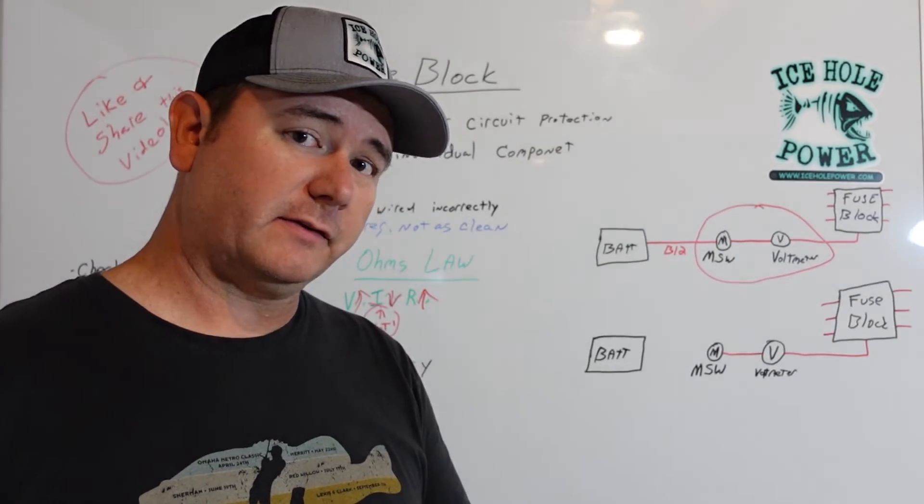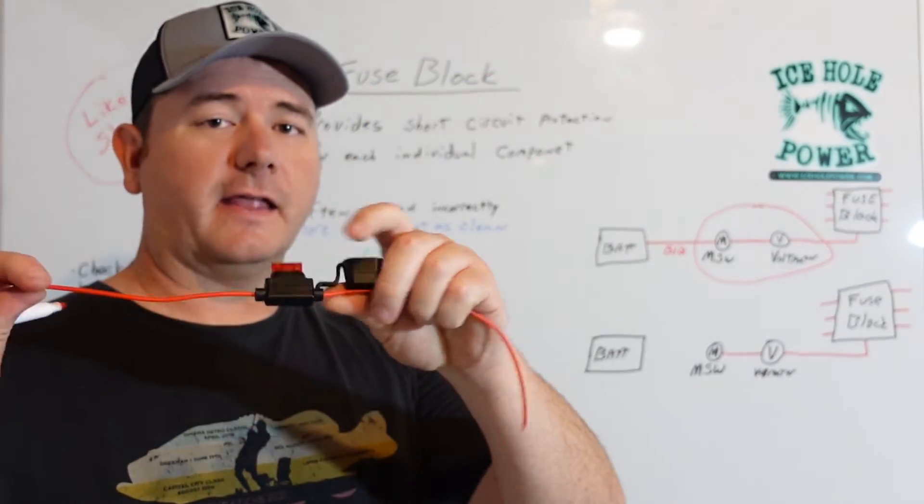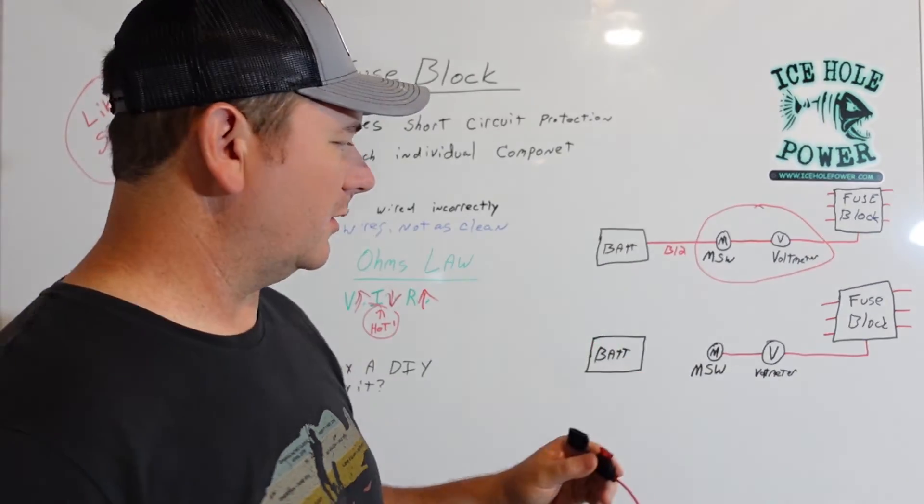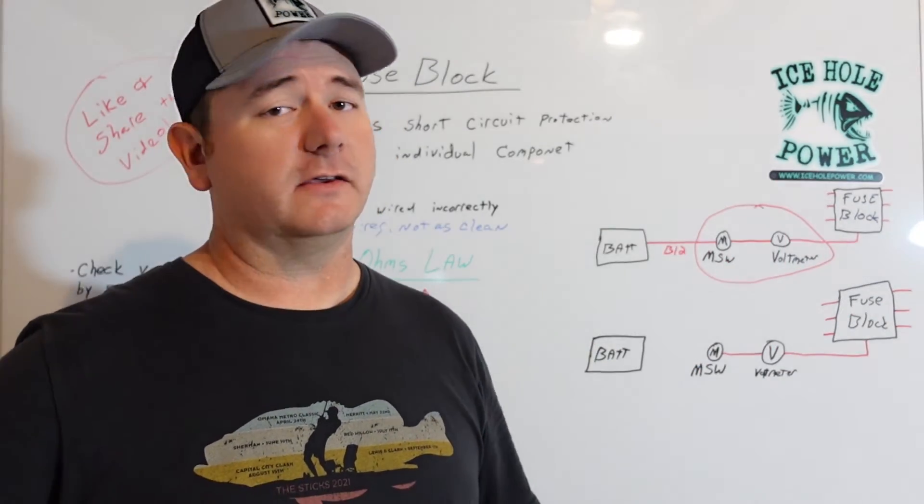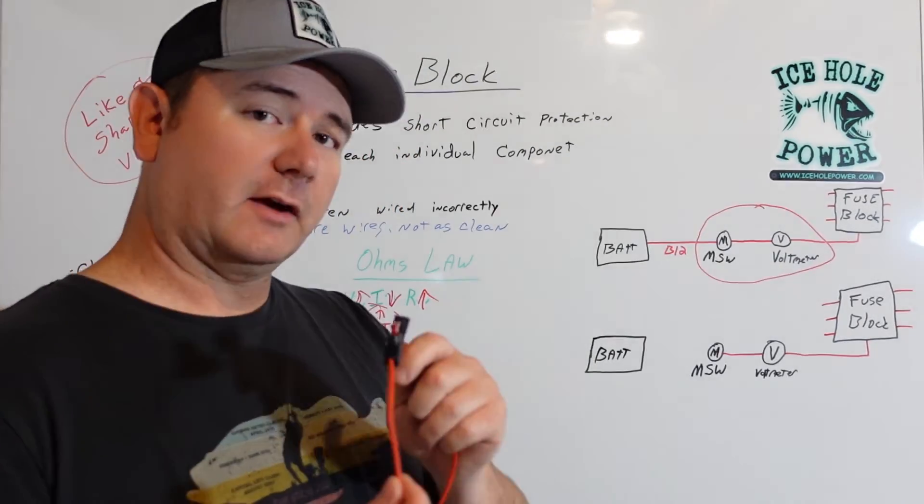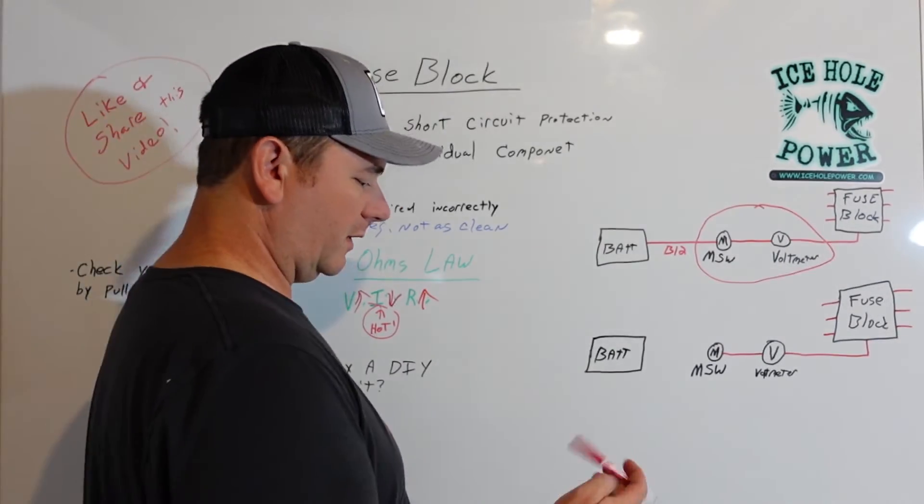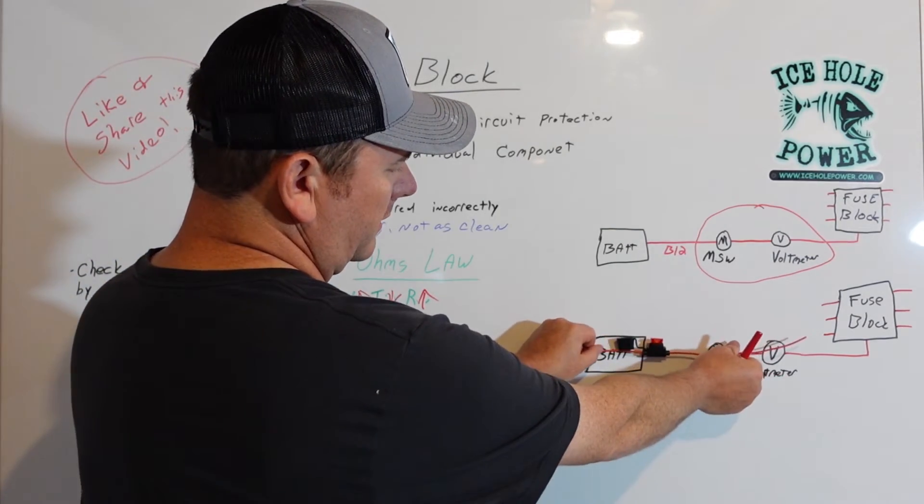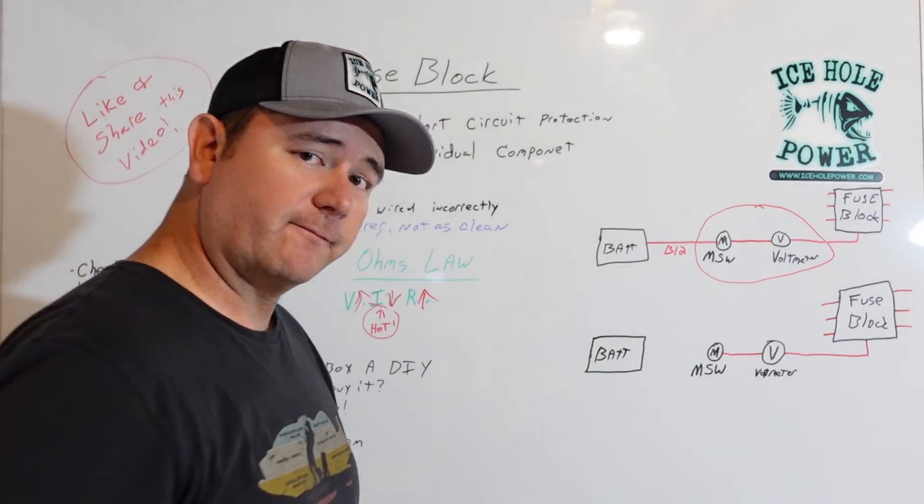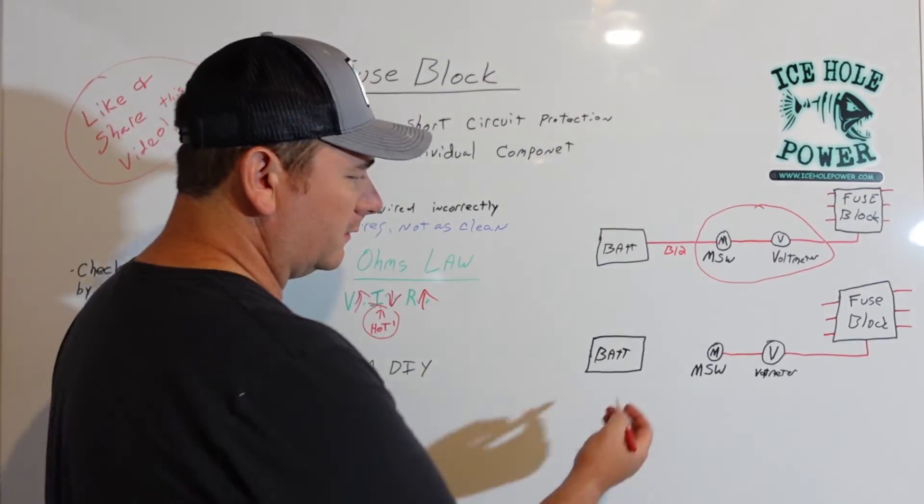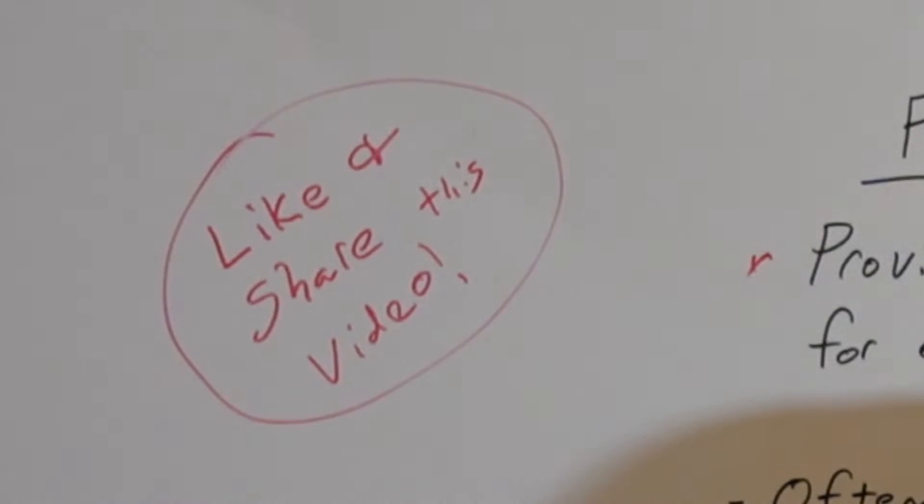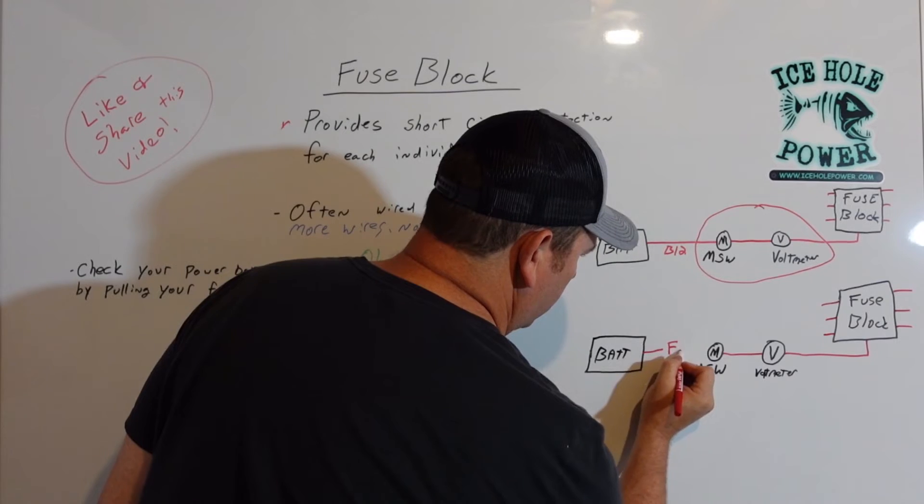Easiest way to fix that is this little guy here. So this is an inline fuse holder and they're super cheap. You can get them. I have them on site. You can get them on Amazon. I don't care. Get them wherever you want to get them. Just get one and put it in. So what you're going to want to do is you're going to want to put this guy between your battery and your very first component. So your master switch. So we're going to do an inline fuse.